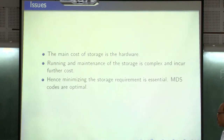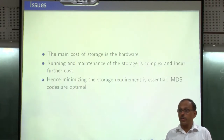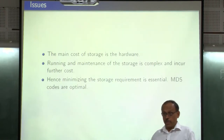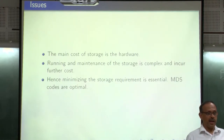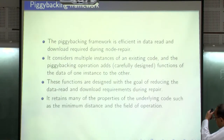The main cost in storage comes from hardware itself, but you also need to maintain it — provide air conditioning and power. Data centers are growing around the world and constitute about 3% of total global electricity usage, which is a considerable amount. Minimizing storage requirement is therefore essential, and MDS codes are optimal in that sense. This code innovation retains all of those properties. The framework improves node downloads by exploiting a piggyback pipeline fashion.